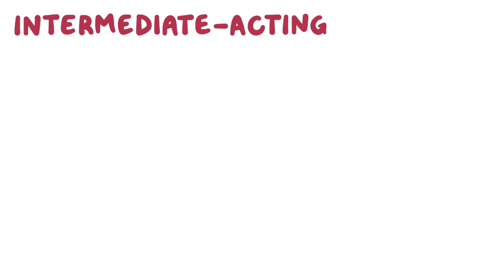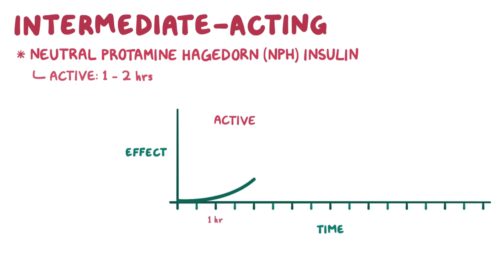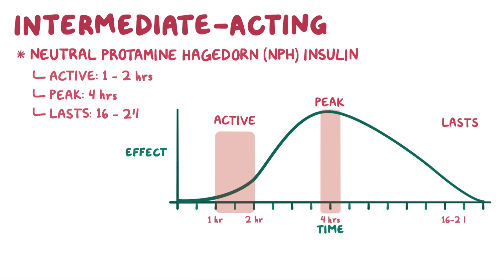Intermediate-acting insulin is known as neutral protamine Hagedorn or NPH insulin. NPH insulin only becomes active around 1 to 2 hours after administration, with a peak effect after 4 hours, and lasts for 16 to 24 hours.